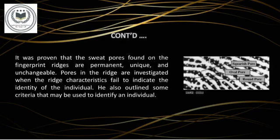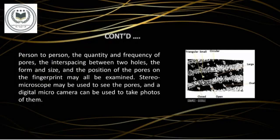Locard also outlined some benchmarks that may be useful in identifying an individual. From one person to another, the quantity and frequency of pores, the interspacing between two pores, the form and size, and also the position of the pores on the fingerprint are studied. To see the small pores, a stereo microscope is used, and to take pictures, a digital micro camera is used.